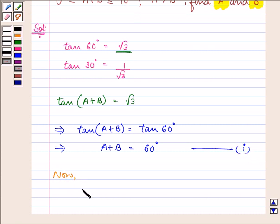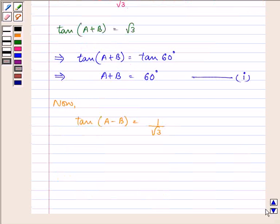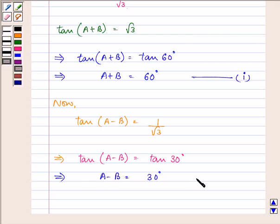Now, we are given that tan(A-B) = 1/√3, but 1/√3 is equivalent to tan 30°. So this implies that tan(A-B) = tan 30°. And this further implies that A-B = 30°. Let it be the second part.